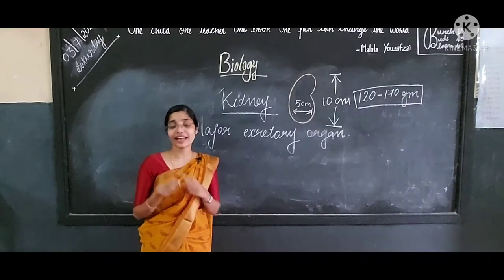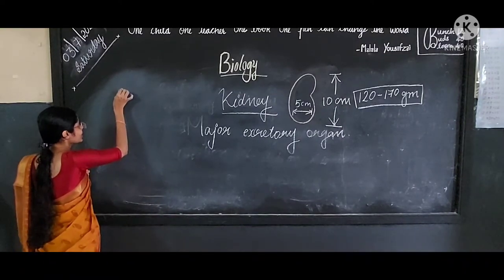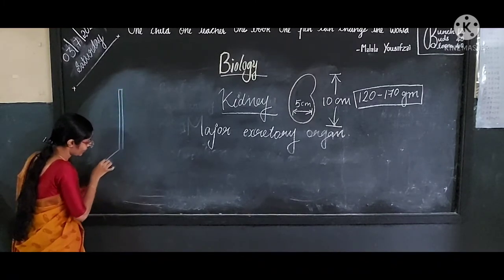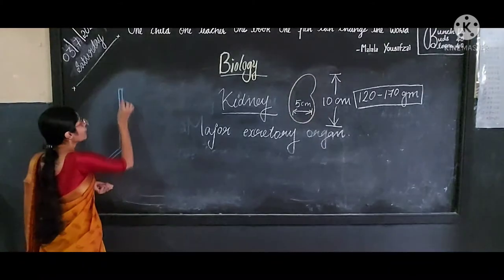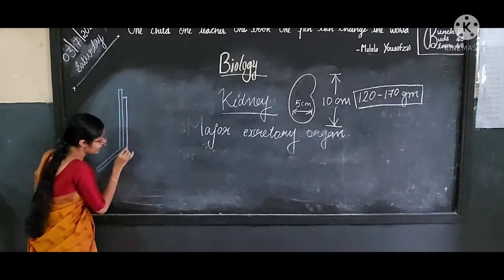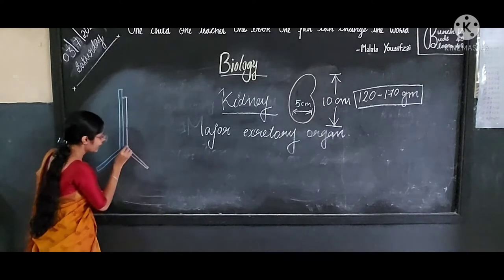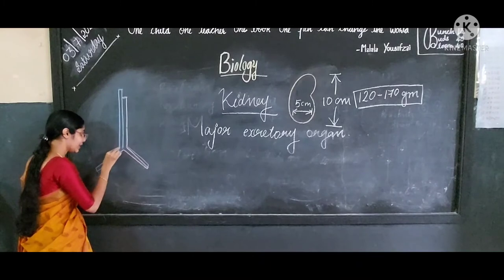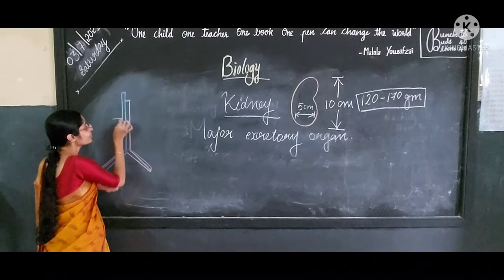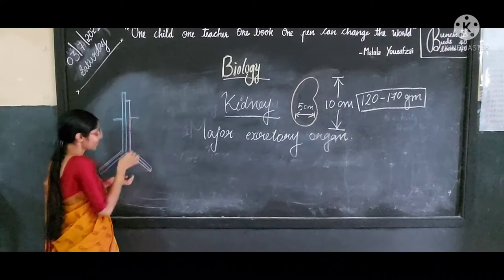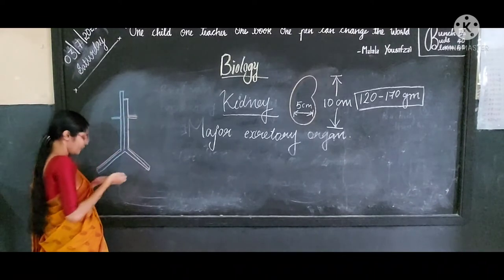Now let's learn about kidney and its various parts. I am going to draw the structure and the various parts of kidney — you just draw it along with me in your science diary. In the same time, let's recall: what's the function of kidney? Kidney plays the role of filtration — it is the major excretory organ. The urea, nutrients, vitamins, salt and other harmful materials will get filtered and expelled out in the form of urine.